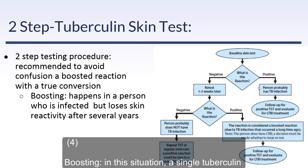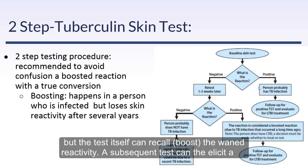A third-generation IGRA was recently FDA-approved that captures the amount of CD8 cells present relative to CD4 cells. While it may not be immediately useful clinically, from a research standpoint — particularly in HIV patients — it may help shed light on the discordance between tests and guide which test to order.